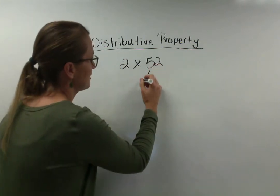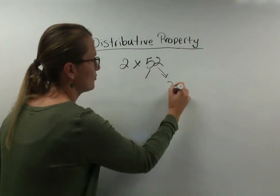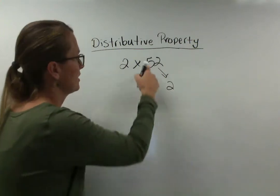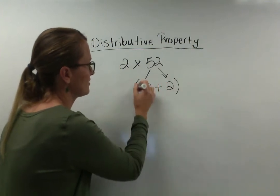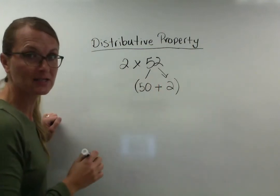So 52 is really made with 2 ones which is 2 and 5 tens which is 50. So 50 plus 2 will equal 52. I'm going to put that in parentheses because I broke it apart.